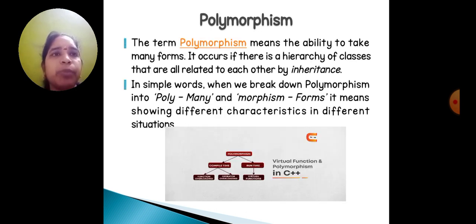Polymorphism. The term polymorphism means the ability to take many forms. It occurs if there is a hierarchy of classes that are all related to each other by inheritance. In simple words, when we break down polymorphism into poly means many and morphism means forms, it means showing different characteristics in different situations.